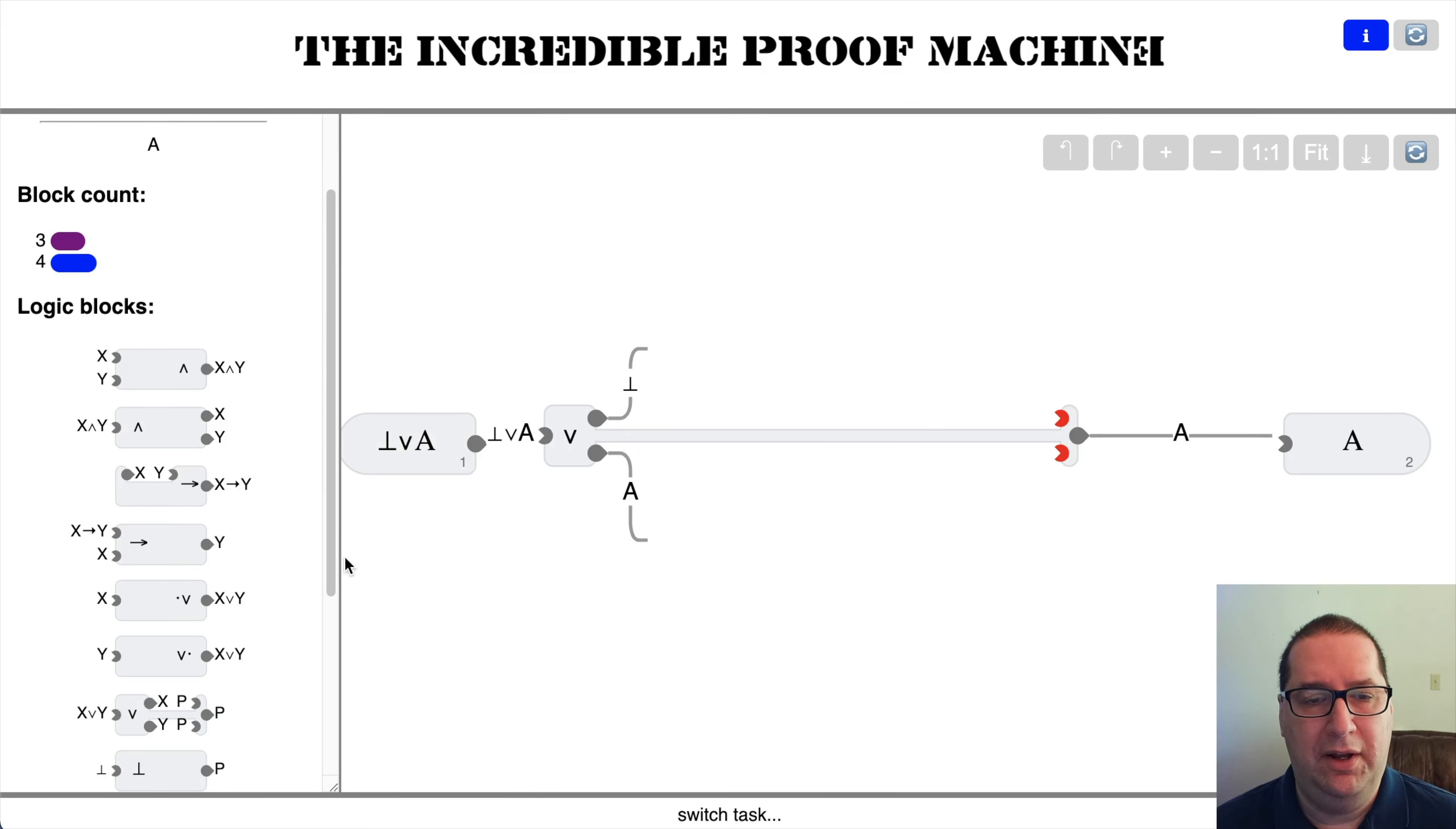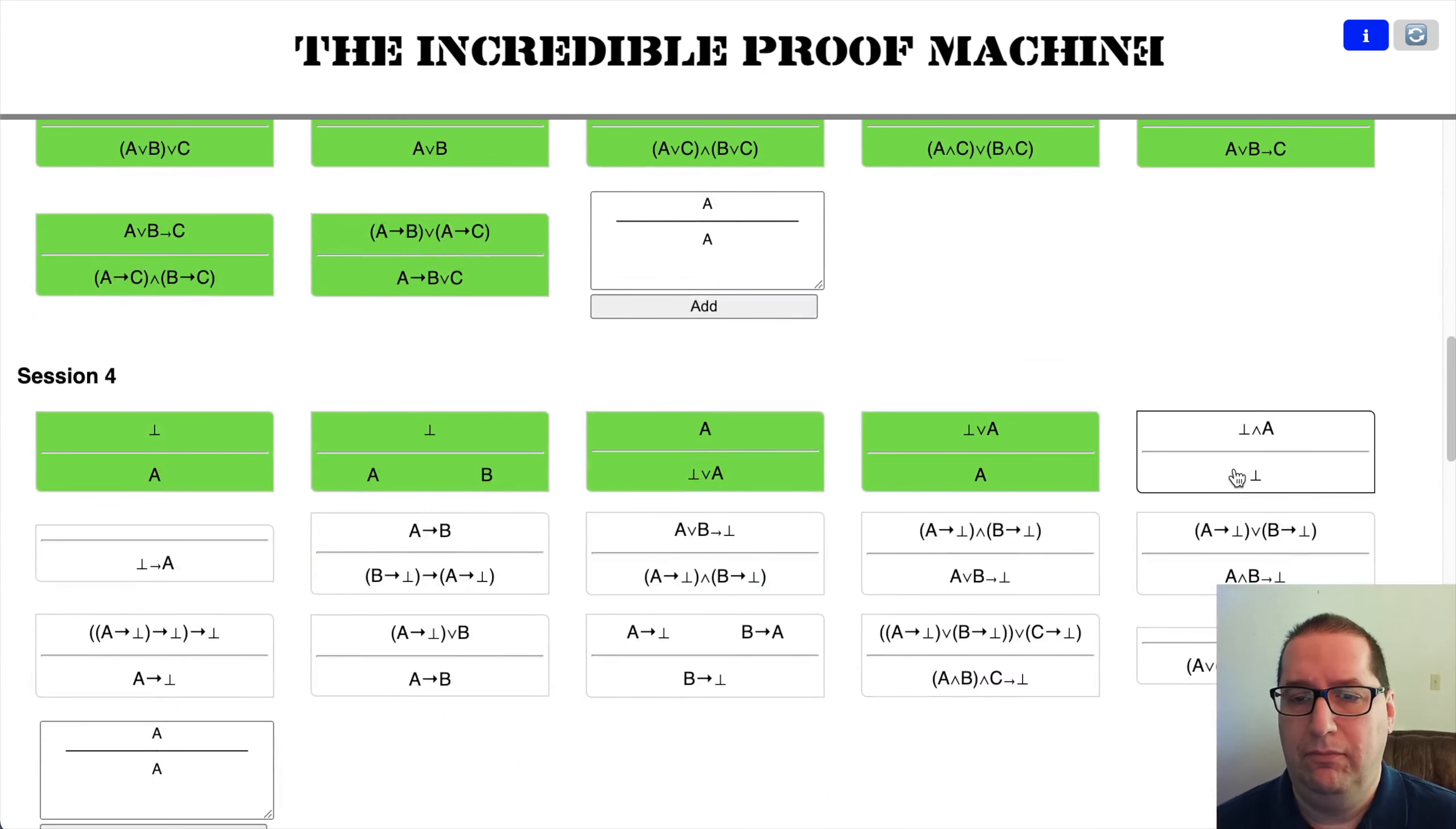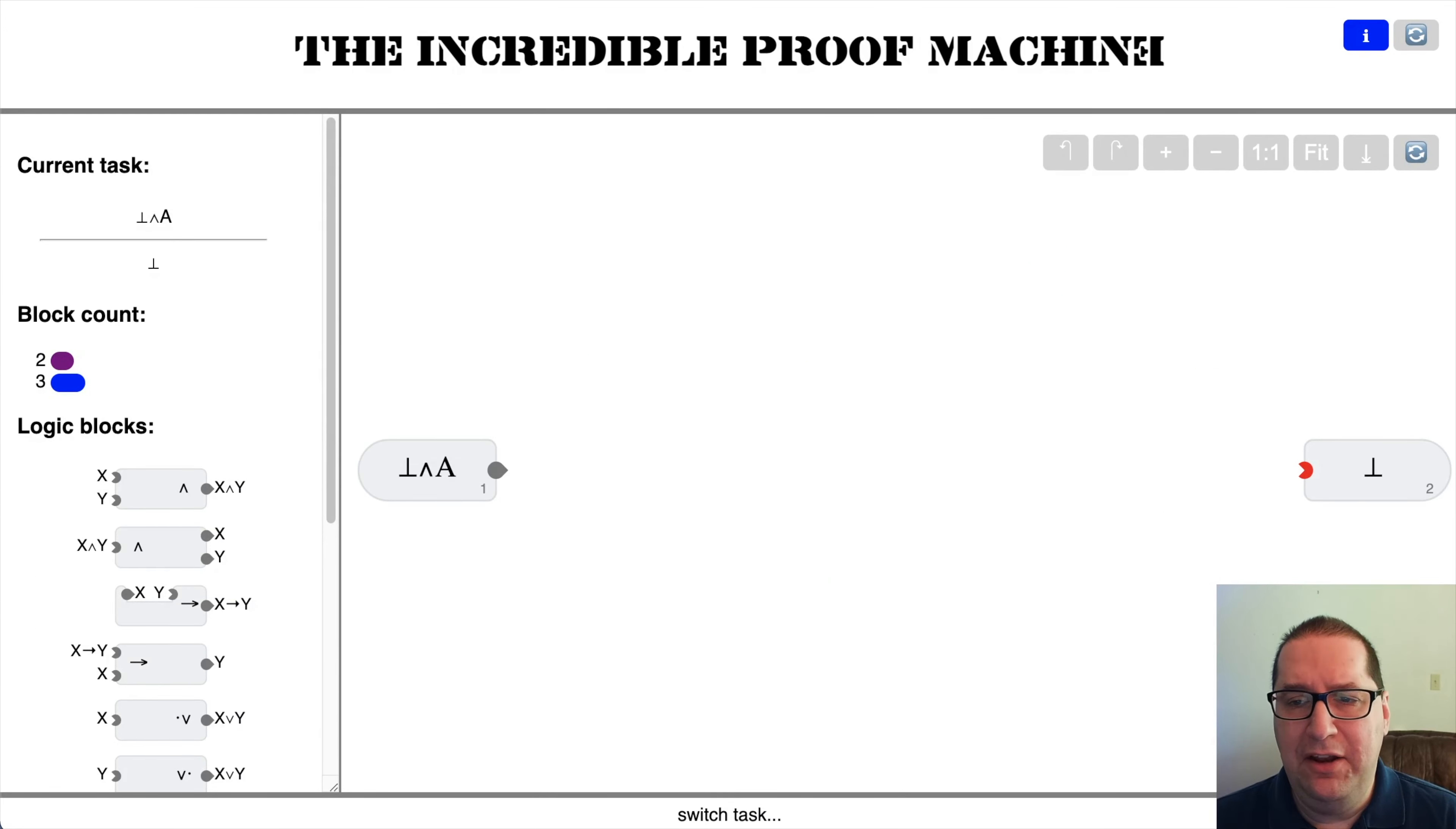From false, from absurd, we can prove A. And from A, A already is A. We just draw that straight across. Pretty simple. Absurd and A implies absurd. We can use an and elimination. Pretty straightforward.